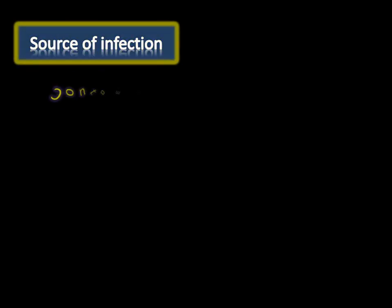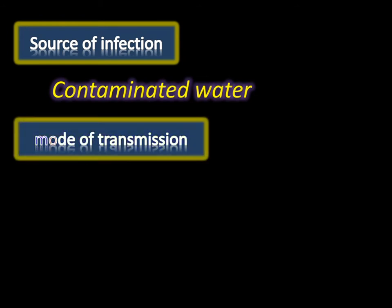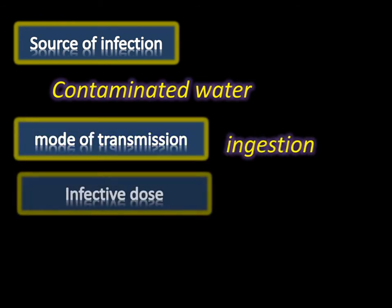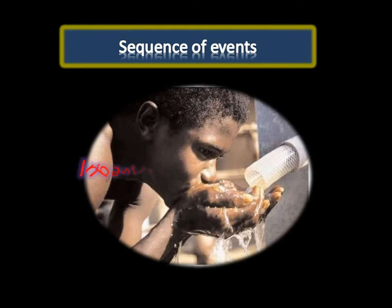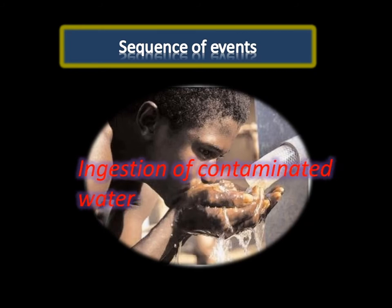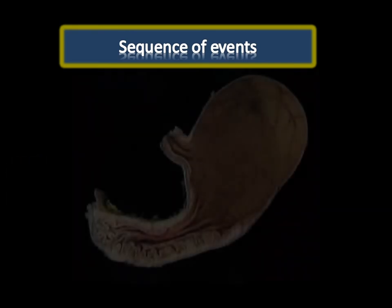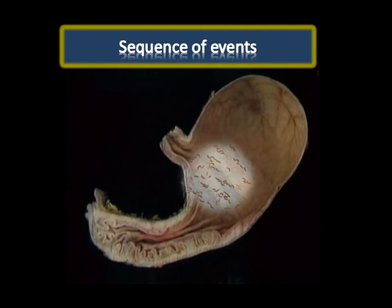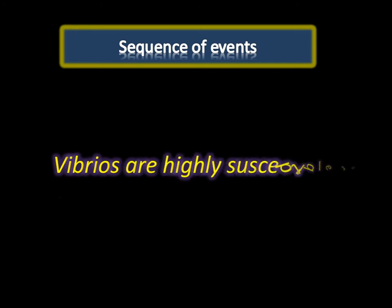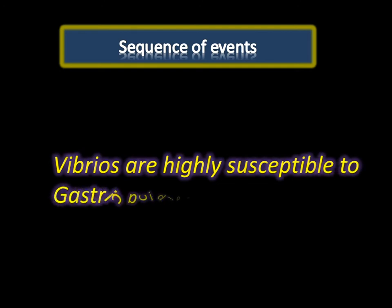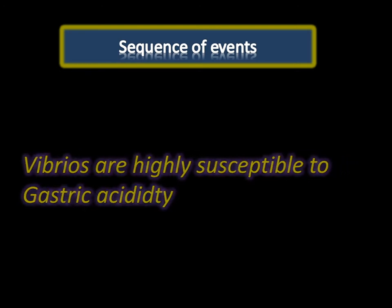Source of infection is water contaminated with Vibrio cholerae. Mode of transmission is by ingestion. The infective dose is about 10^5 to 10^8 bacilli. Cholera is a waterborne disease. The sequence of events starts with ingestion of contaminated water. The bacteria reach the stomach, where vibrios are highly sensitive to gastric acidity. If the person has achlorhydria or ingests bacteria along with a meal, some bacilli may escape and reach the small intestine, penetrating the mucous membrane.